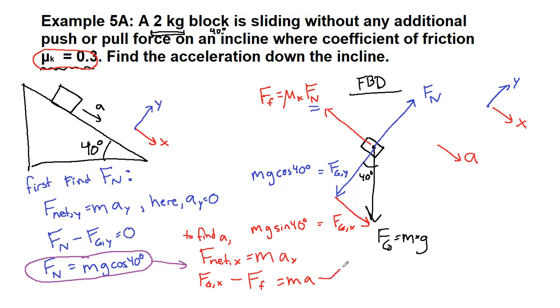So to plug things in here, we have mg sine 40 degrees from the force of gravity minus, so mu k is 0.3, and then fn is mg cosine 40 degrees. And we get that all of that is equal to m times a.